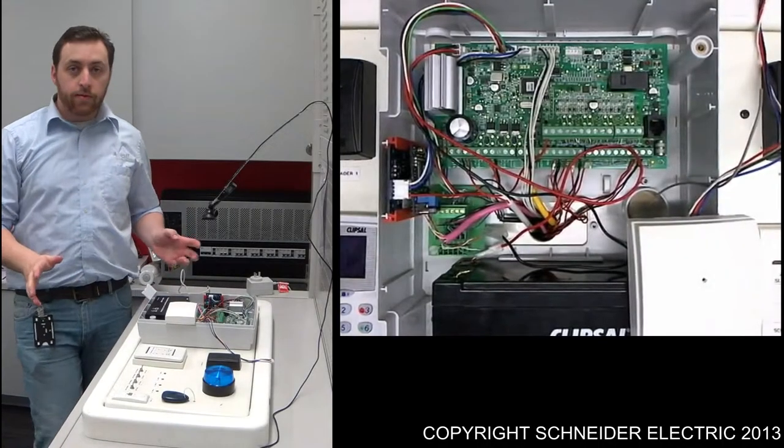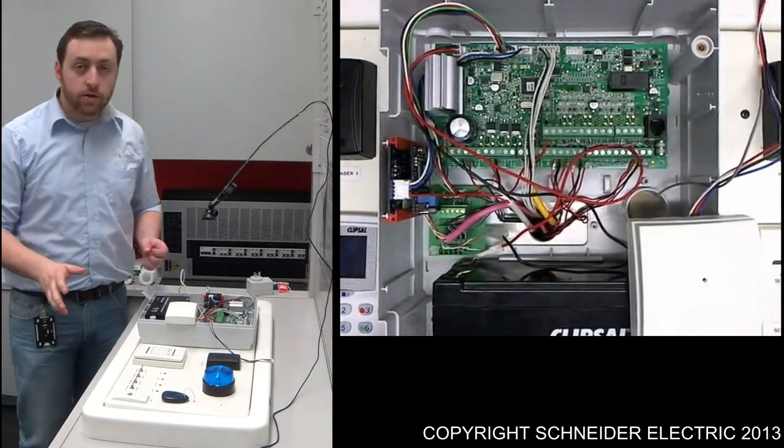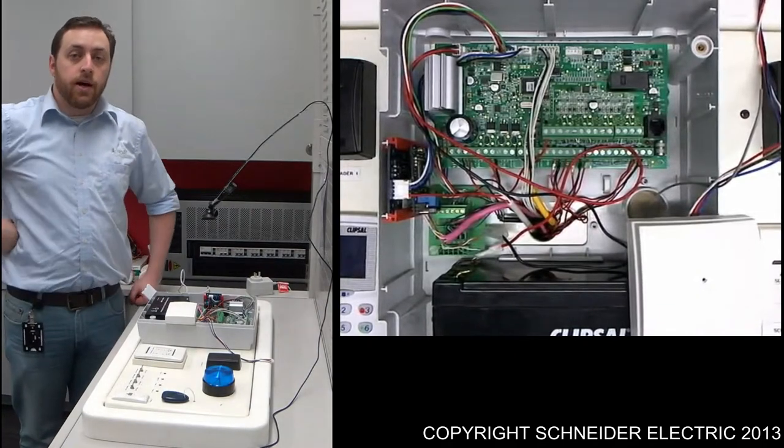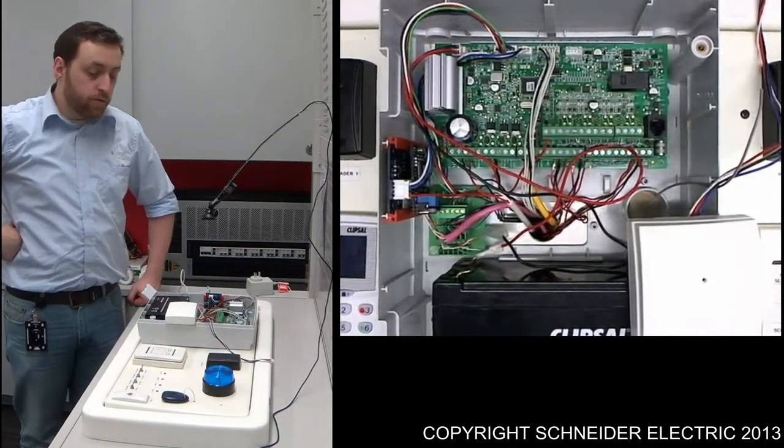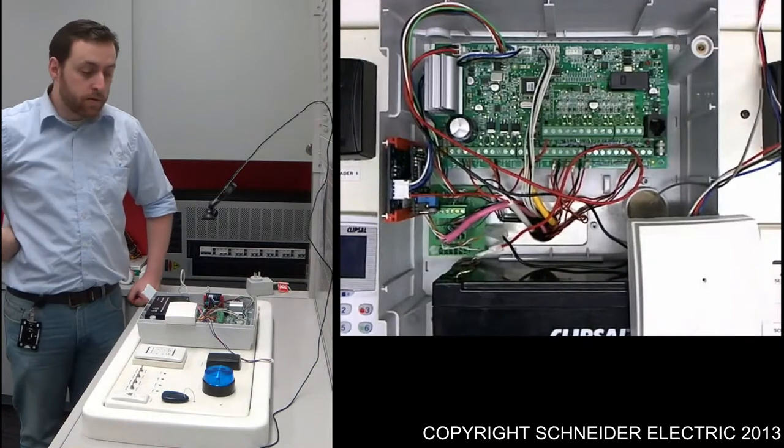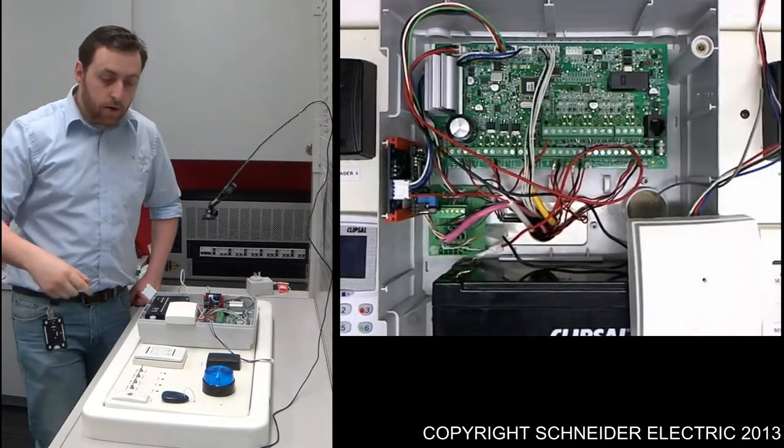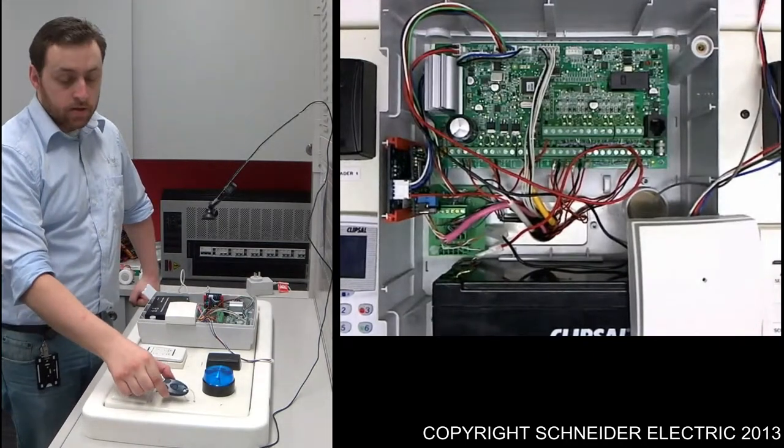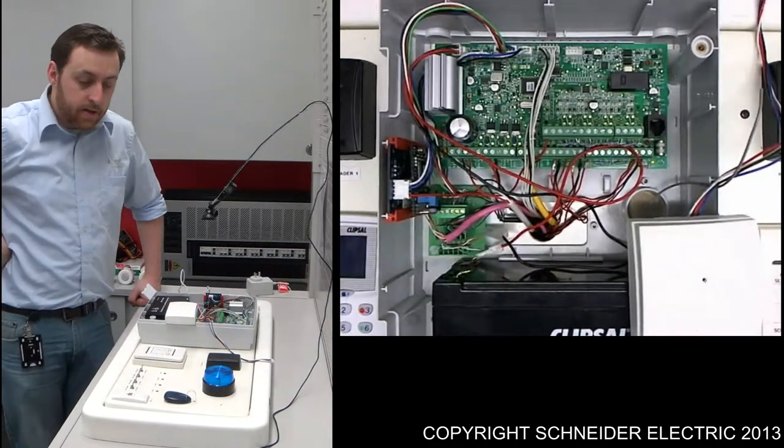Before we do any programming for adding a pendant, I'd like to quickly take you through the devices we're using to enable this to happen. I've got a wireless 3-button key pendant with on, off, and a panic button. The panic button is located right in the center.